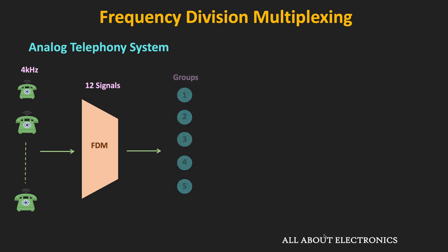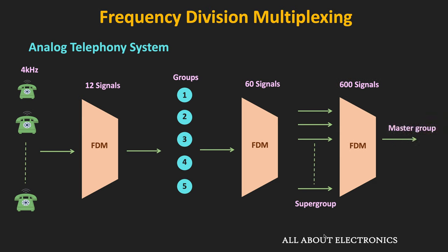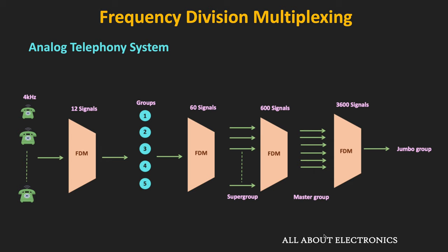In the next level of multiplexing, 5 such groups are multiplexed to form the supergroup. This supergroup has a bandwidth of 240 kHz and contains a total of 60 voice channels. Then 10 such supergroups are multiplexed to form the master group, which contains a total of 600 voice channels. As per calculation, the bandwidth of the master group should be 2.4 MHz, but because of guard bands between each supergroup, it increases to 2.52 MHz. In the next level, 6 such master groups are combined to form the jumbo group, which contains 3600 voice channels. In this way, the FDM hierarchy is employed in the telephony system.